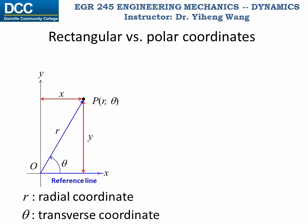If you recall, for the x axis its unit vector is known as i, and for the y axis its unit vector is known as j. For the r axis it also has a unit vector representing its direction, which is known as u_r. And for the transverse coordinate it also has a unit vector, u_theta, which is always perpendicular to u_r.